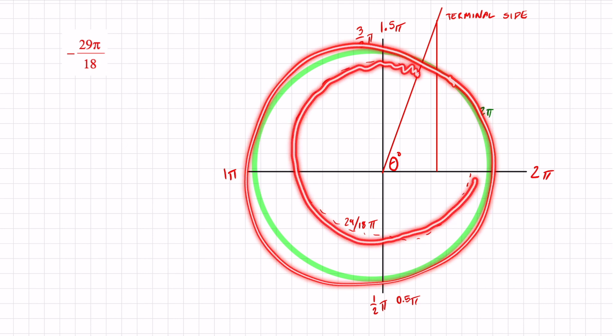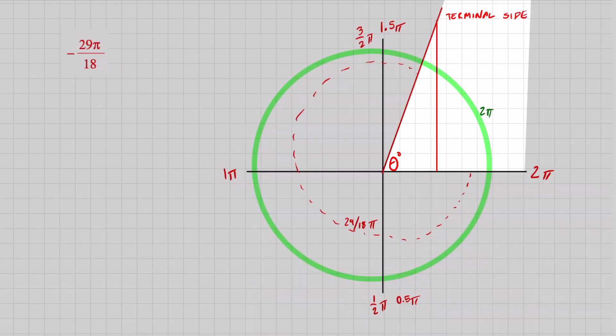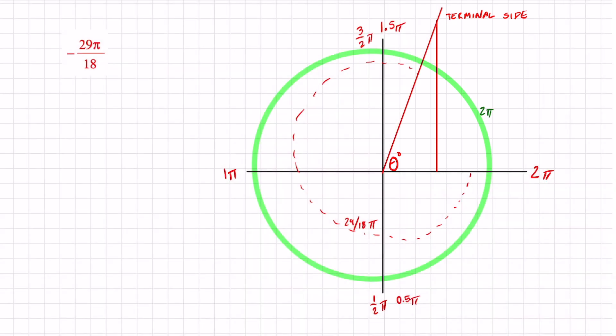So the strategy here is just to take a full circle and cut away this piece that we have right here. And I will get my reference angle from here to here. The opening from my terminal side to the x-axis. All we have to do is take 2π and subtract 29 over 18 π.